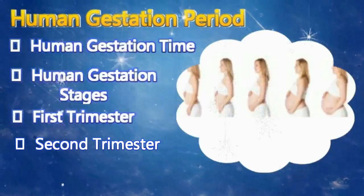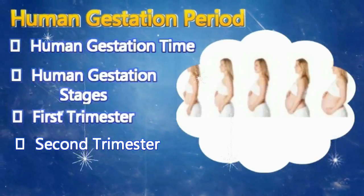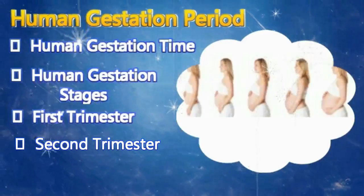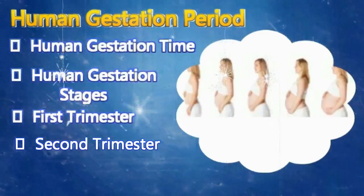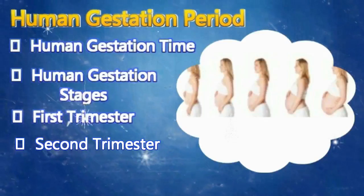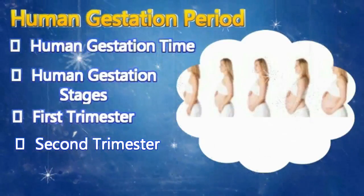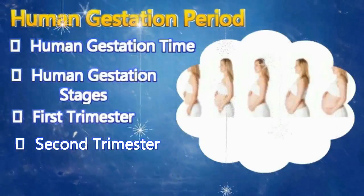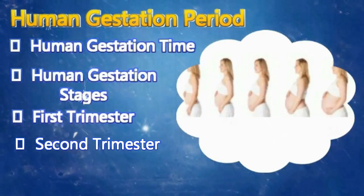The second trimester begins from the fourth month and extends up to the sixth month of pregnancy. By this time, morning sickness usually goes away and the woman starts feeling energetic. The uterus grows in size as the baby in the womb is developing day by day. During the fourth month — more specifically during the 19th or 20th week — the fetus begins to make movements, though many women experience fetal movements much later in their maternity. Another important development during the second trimester is that the fetus's gender can be determined by this time.